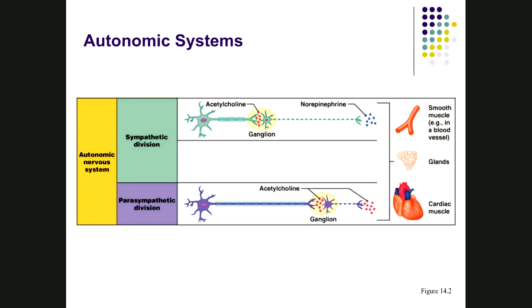Pre-ganglionic neurons are type B neurons — lightly myelinated and medium fast. Post-ganglionic neurons are type C neurons — unmyelinated and much slower. Because there are two neurons, there are two synapses and two neurotransmitters. In the sympathetic division, the neurotransmitter between pre- and post-ganglionic neurons is acetylcholine, and between the post-ganglionic neuron and the effector organ it is norepinephrine. In the parasympathetic, both synapses use acetylcholine.